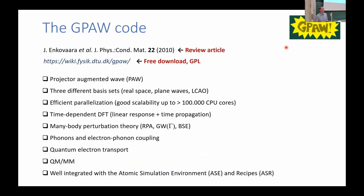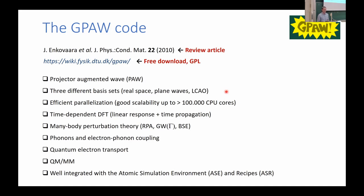Let me say a little about the DFT code we used to produce all this data. It's the GPAW code, which is an open-source code written essentially in Python, making it attractive for developers because it's fairly straightforward to read and contribute new functionality. It's based on the PAW method and supports three different types of basis sets: a real-space grid that's efficient for large systems due to domain parallelization, a plane wave basis set like VASP, and numerical atomic orbitals like the SIESTA code. You can switch between these three basis sets depending on the application, making it a pretty flexible and unique code.